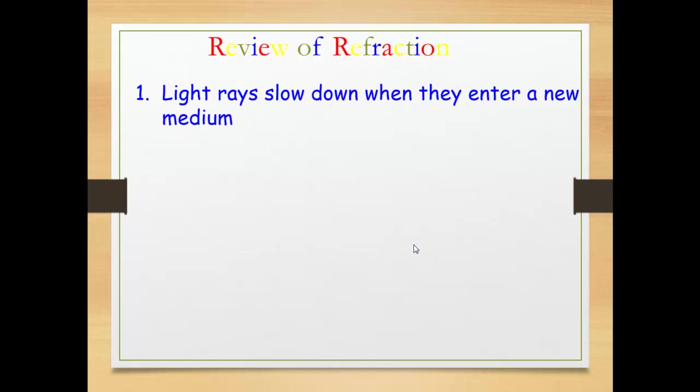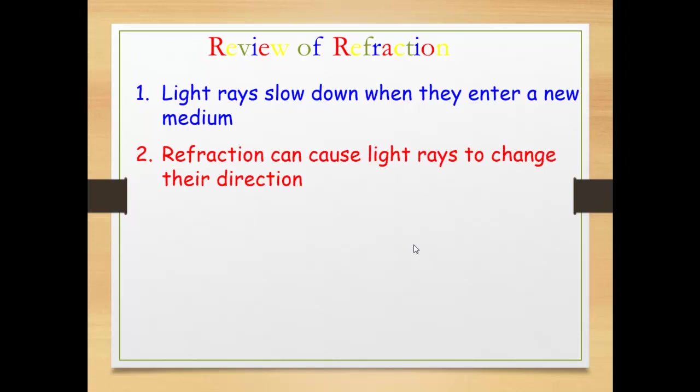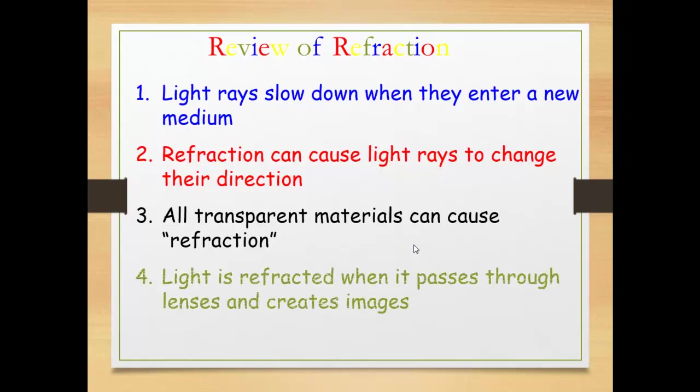Light rays slow down when they enter a new medium. Refraction can cause light rays to change their direction. All transparent materials can cause refraction of light. Light is refracted when it passes through all lenses and creates images.